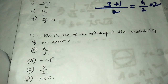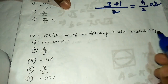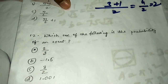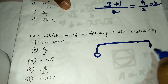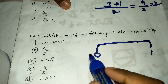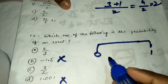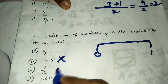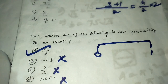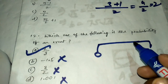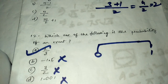Question number twelve: which of the following can be the probability of an event? For a value to be a valid probability it must lie between 0 and 1. Negative numbers are directly cancelled. Any value greater than 1 is cancelled — for example, 3/2 > 1, cancel. The answer is 2/3. Thank you friends — if you like my videos please like and subscribe.